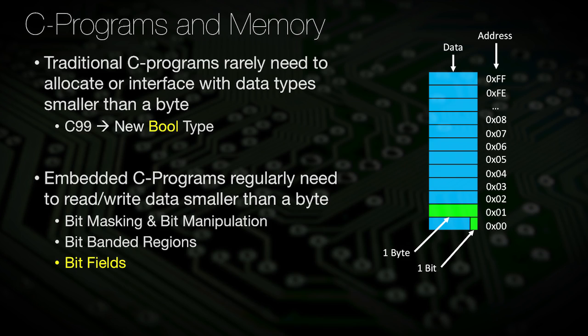These track things like peripheral status and control, and this is done to save space and cost. Luckily, C programming provides a feature called bitfields that helps us manage smaller data types and sizes within a structure.